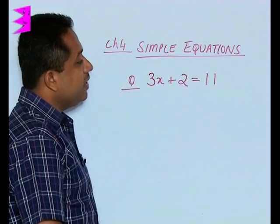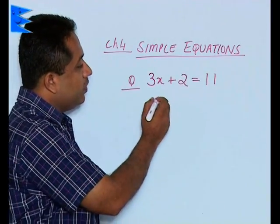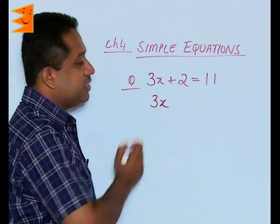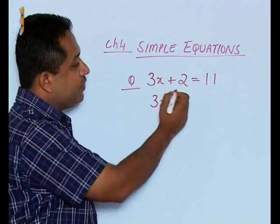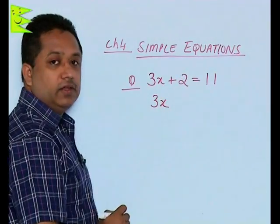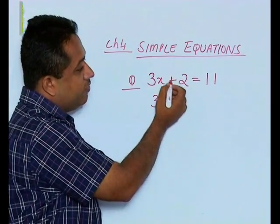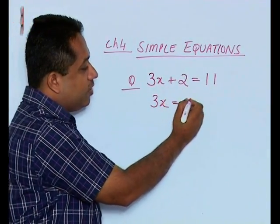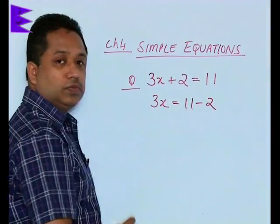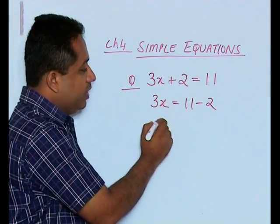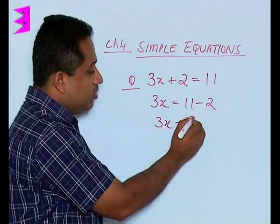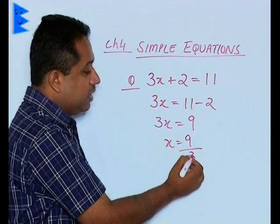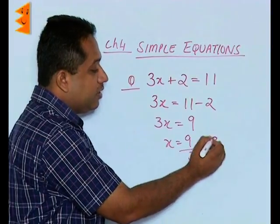In this method, we keep the x term on one side. We're going to keep 3x here and shift the constant term to the right side. When we transfer +2 to the right side, the sign changes, so we get 11 - 2. That's 9, so 3x = 9. Therefore, x = 9 ÷ 3 = 3.